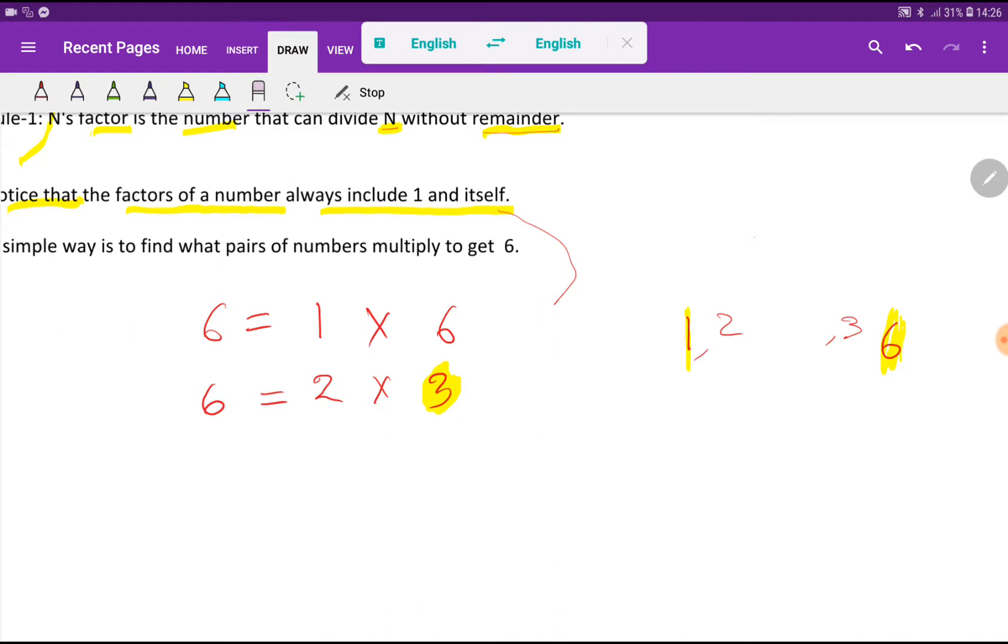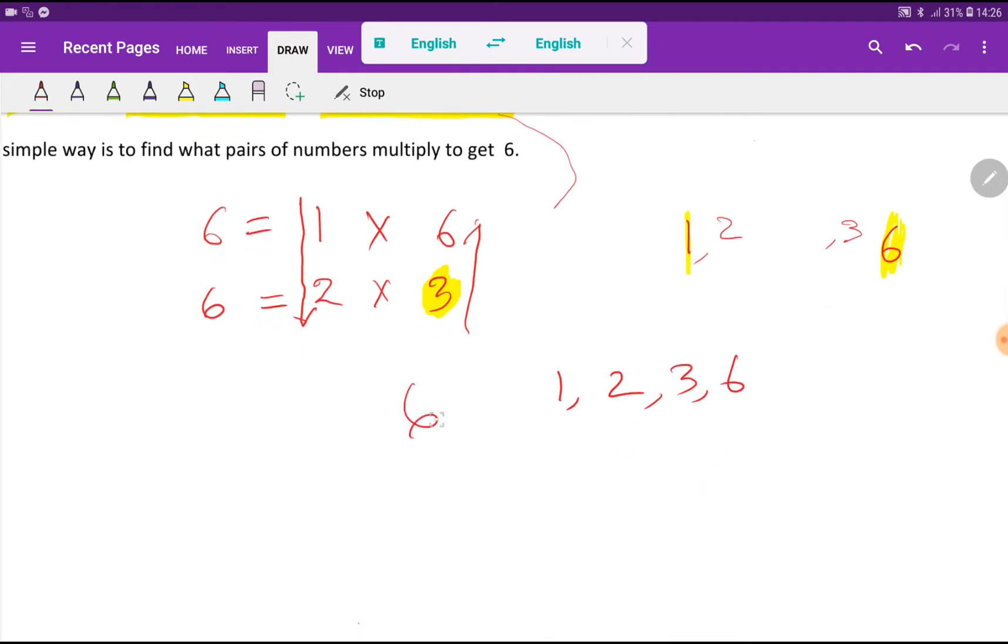The factor of 6 is 1, 2, 3, 6. These are the positive factors. And negative factors is like this. Just you have to put negative sign before every positive factor.